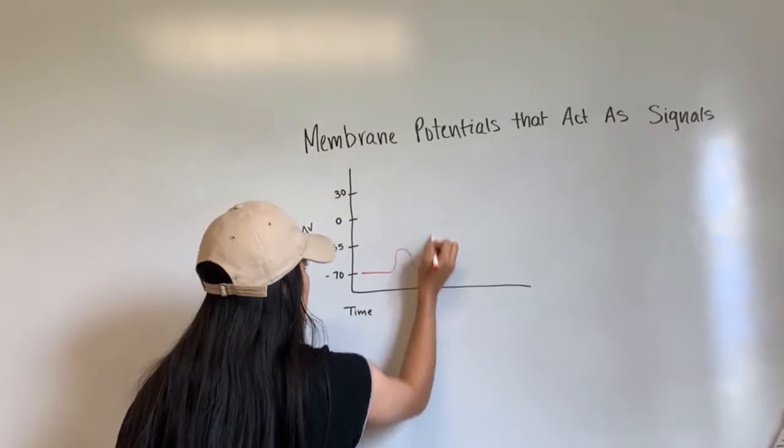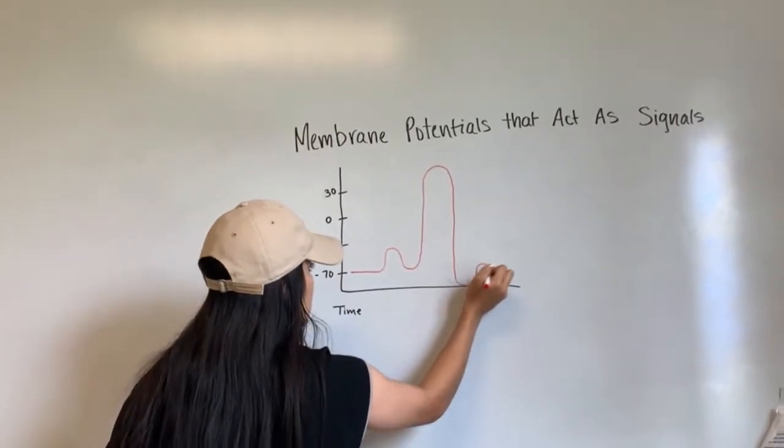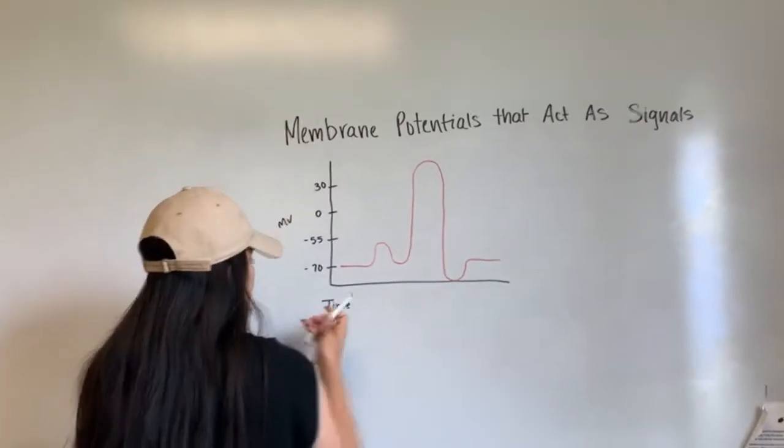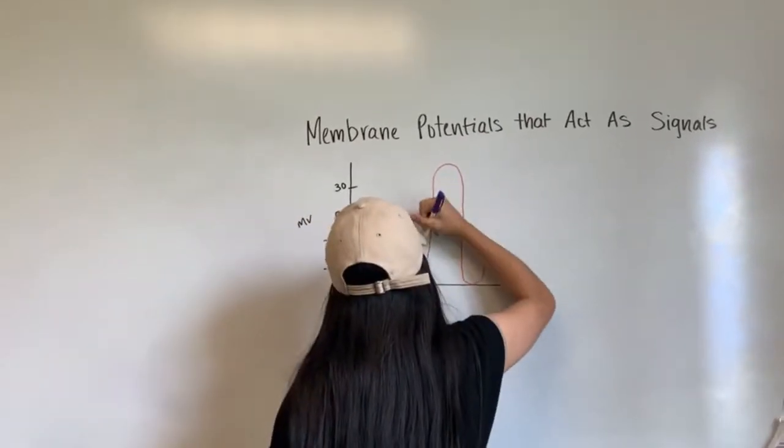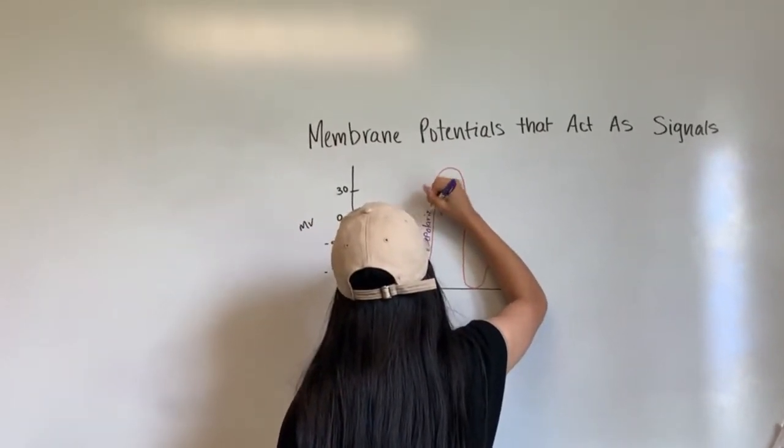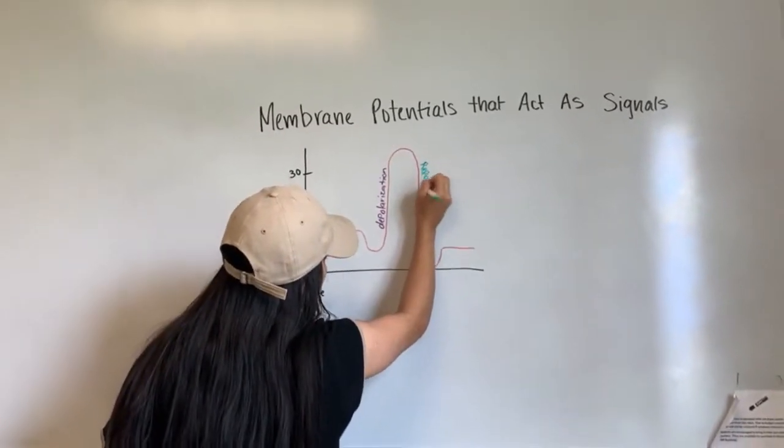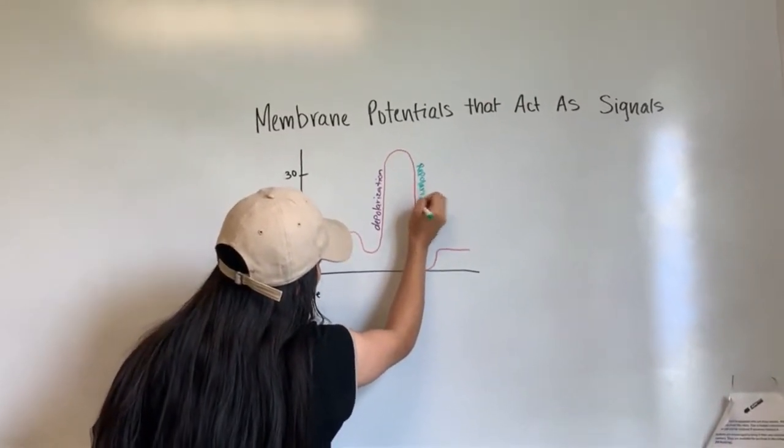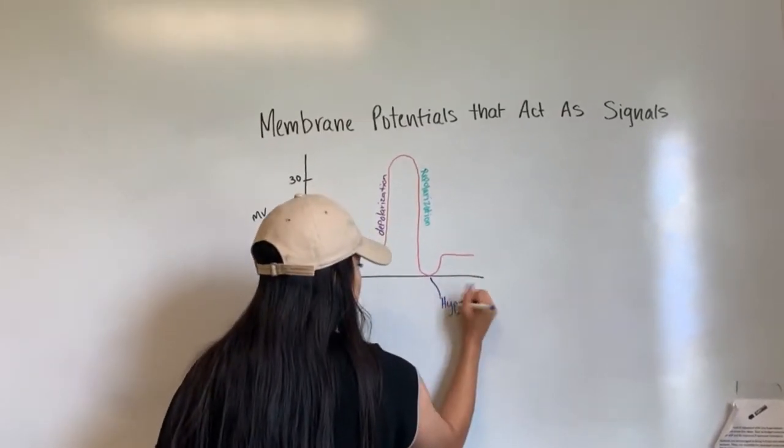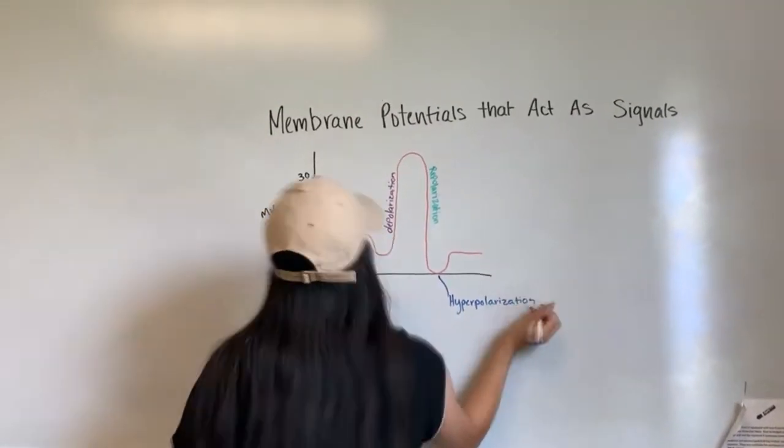Action potentials are nerve impulses and they are only in axons. In order to create action potential in axons, you have to depolarize the axon hillock to negative 55 millivolts. A resting membrane potential is always at negative 70 millivolts and the threshold to create the potential would be negative 55 millivolts.